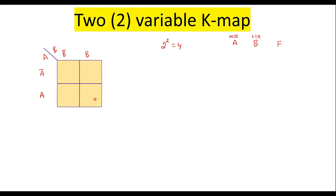Alternatively, we can represent the rows as 0 and 1, where A-bar is 0 and A is 1. For columns, B-bar is represented as 0 and B as 1. This is another way of representation. So we can see there are four cells, and the number of each cell can be represented in decimal. In this cell we have A equal to 0 and B equal to 0, so in decimal, 00 is nothing but 0. The cell number of this one is 0.